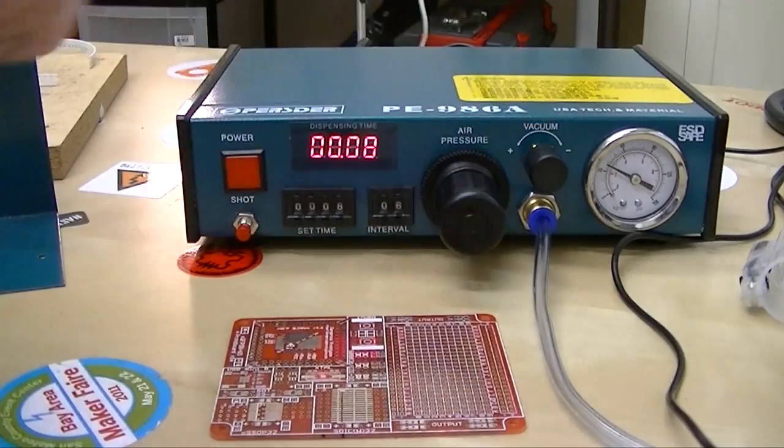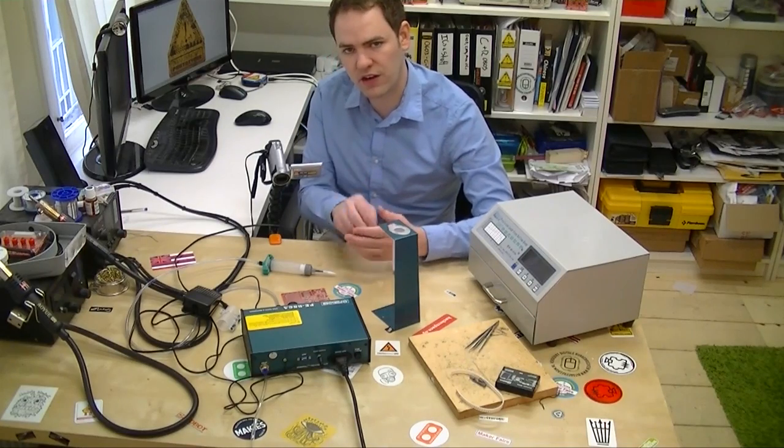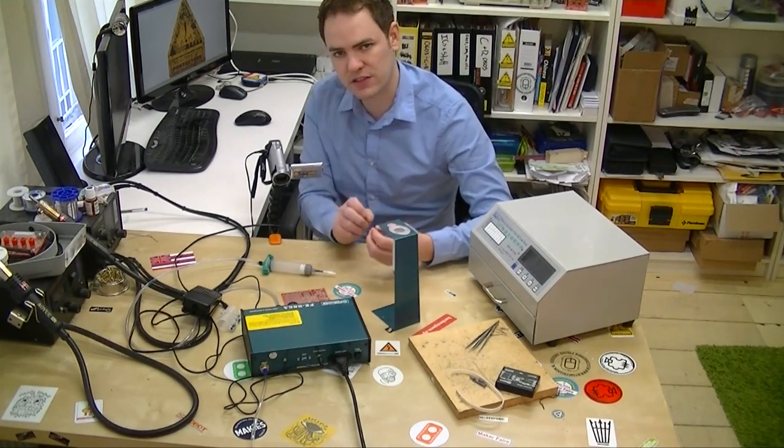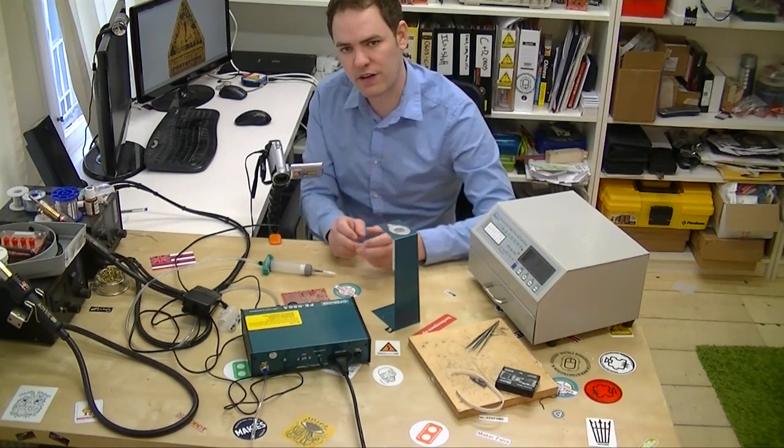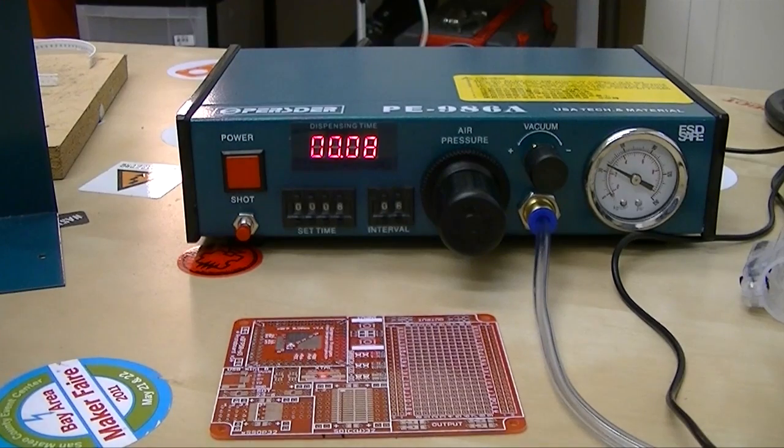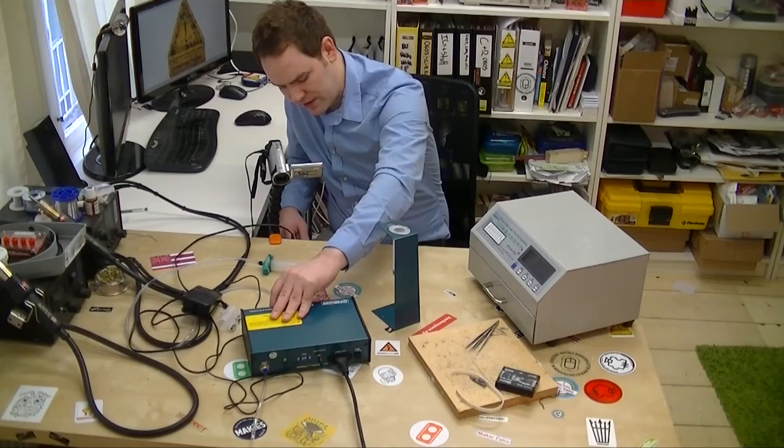There's also a vacuum setting on this one, and what that means is when you dispense solder, at the end it sucks back just a little bit. That helps break it off from the nozzle so it goes cleanly onto the board. I'm using just a little tiny bit of vacuum.